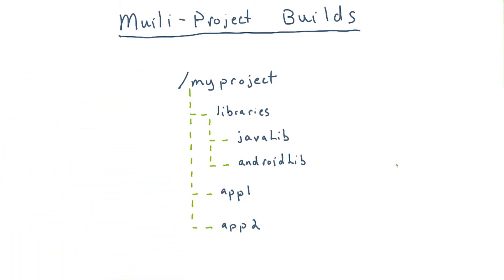If you're creating an Android app using Android Studio, this file is automatically generated for you. In fact, every Android project created by Android Studio is a Gradle multi-project by default. Android Studio refers to sub-projects as modules, but we'll use the two terms interchangeably. Let's check out an example.